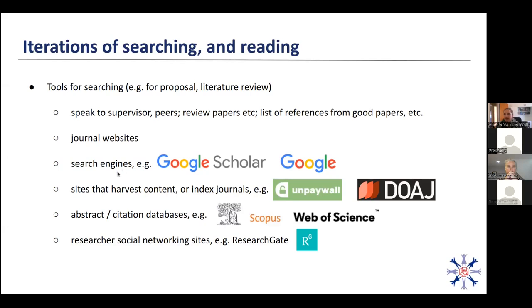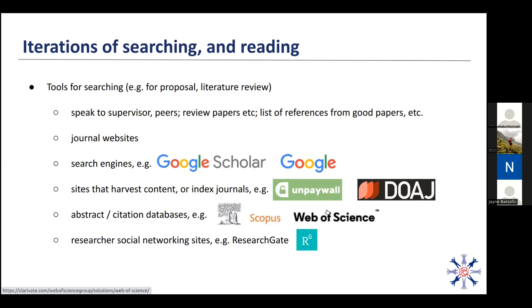There are a variety of search engines — for example, Google Scholar. You can also look at tools that harvest content or index journals, like Unpaywall and the Directory of Open Access Journals, which give you full text access. And then abstract or citation databases like Scopus or Web of Science — these are typically things you learn about through your university or libraries — and also ResearchGate.